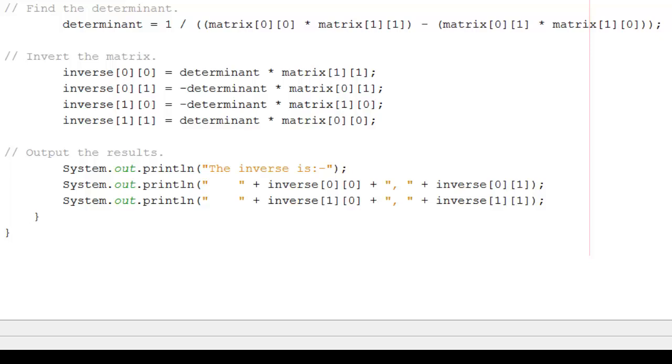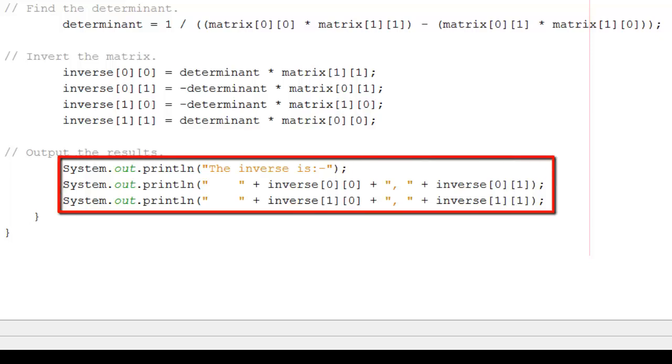I can now output the matrix that I want, the inverse matrix. And that's what I'm doing in this section down here. I'm outputting each individual element so that I can see what it's become.